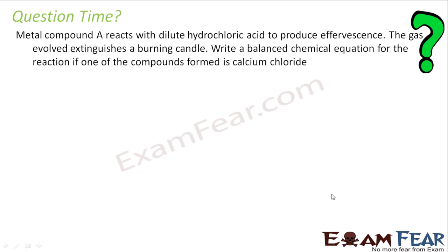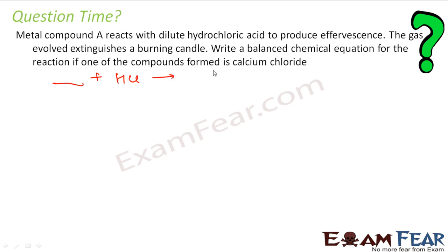Let us take one question. A metal compound A reacts with hydrochloric acid to produce effervescence. The gas involved extinguishes a burning candle. We have to write the balanced chemical equation. If one of the products is calcium chloride, we need to identify compound A.